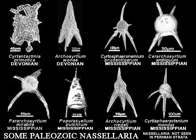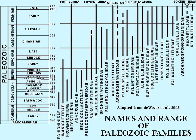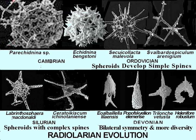The last chart lists all of the 28 families of Paleozoic radiolarians and their ranges. Many of them are depicted in these slides of representatives of the successive periods.